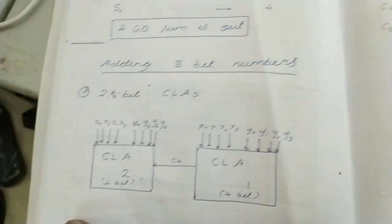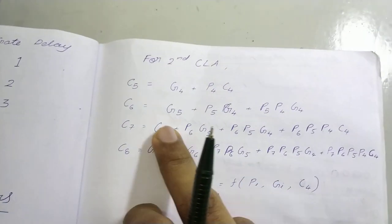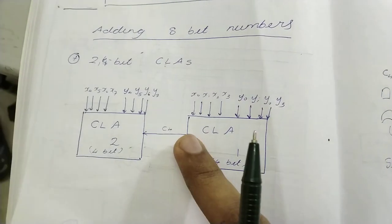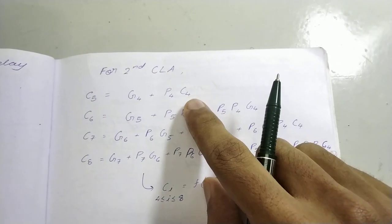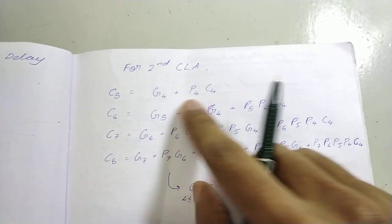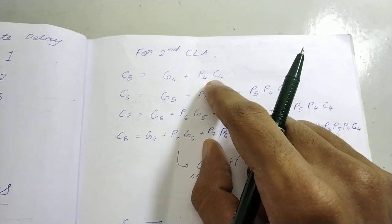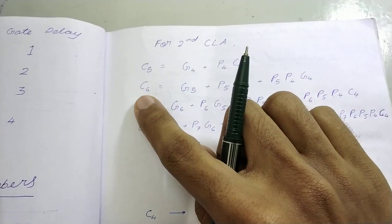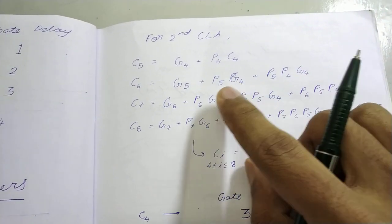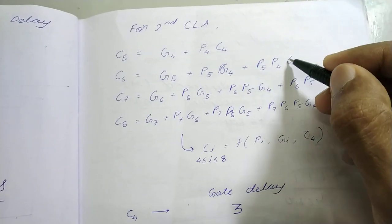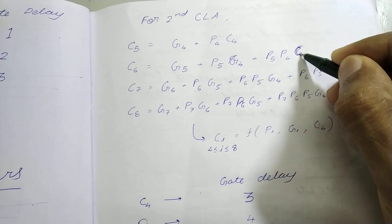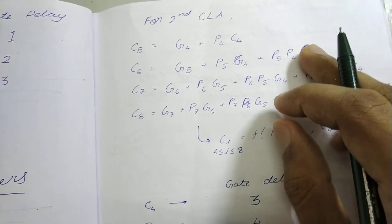So what we are doing is our second CLA. For second CLA we find the values in terms of C4. C4 is the carry that is coming from here. So in terms of C4 we will get the generate functions and propagate functions. We will get C5 in terms of C4, C6 in terms of C4, and C4.